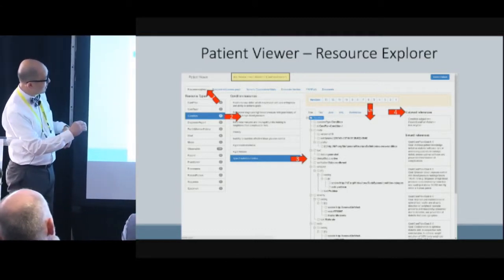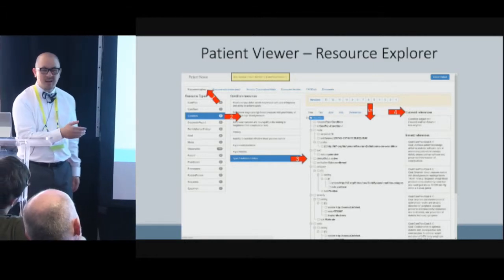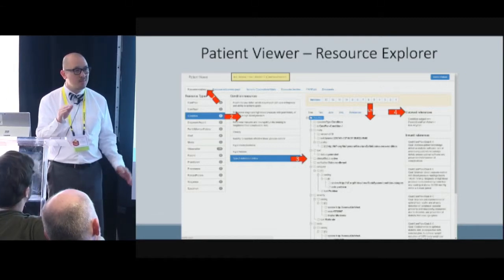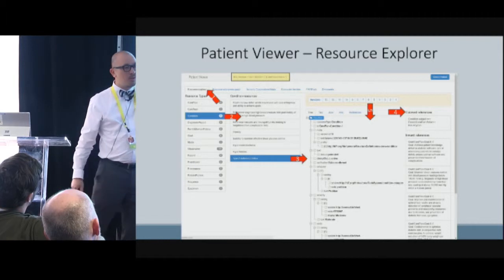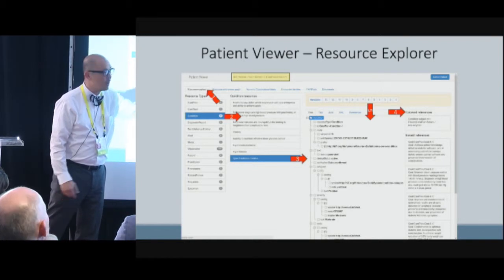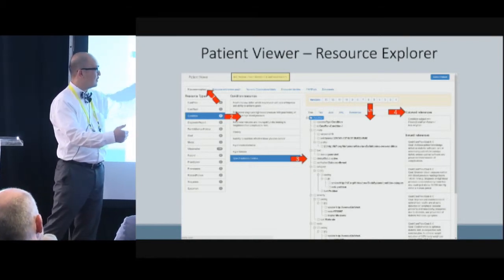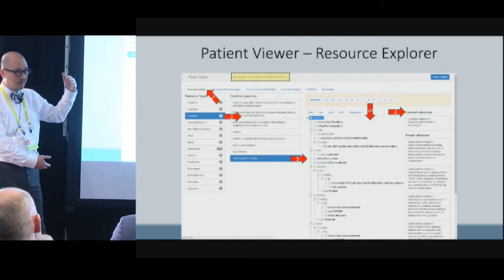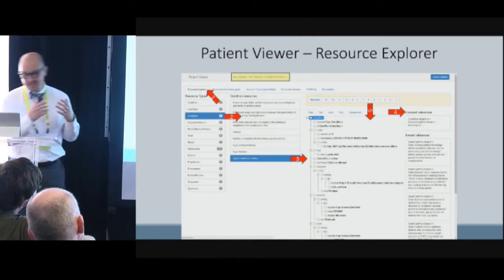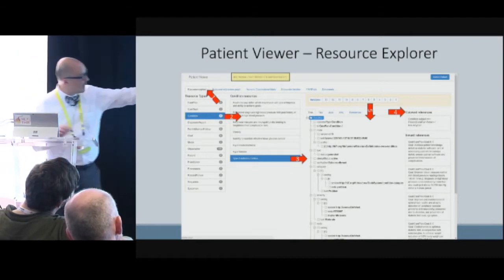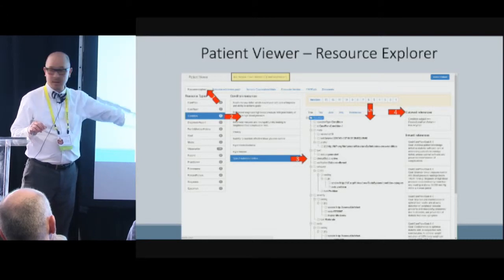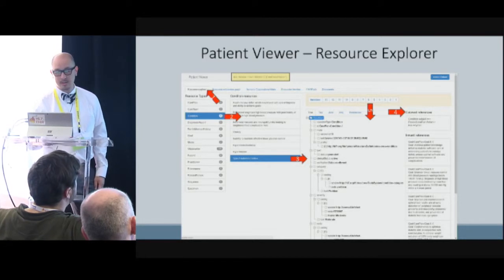On the right-hand side are the inward and outward references. Outward references are resources that this resource points to. Inward references are resources that reference this particular resource in their structure. You can click on either the outward or inward reference, change the focus, and see what the data looks like. It's really helpful as you're trying to explore and understand the structure.